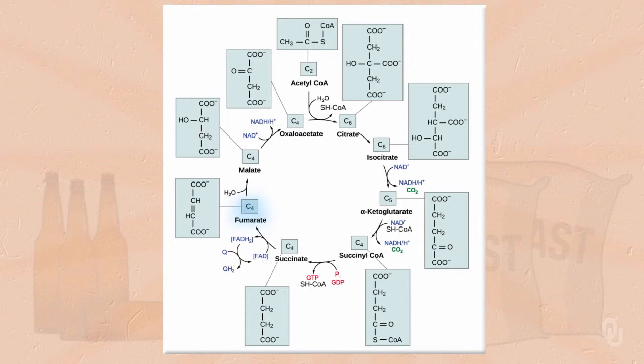So moving back to fumarate, our next reaction catalyzes the hydration of the double bond of fumarate to make malate, and specifically, not shown on this diagram, but it's L-malate. That is the stereochemistry. L-malate is then oxidized back to our starting compound oxaloacetate, and in the process, NAD+ is reduced to NADH.